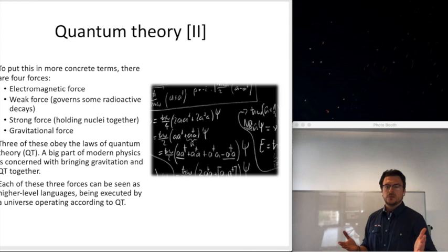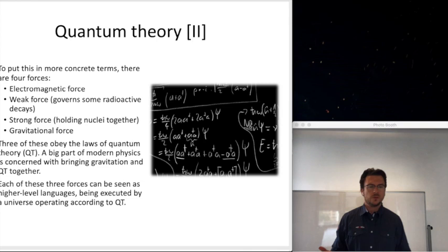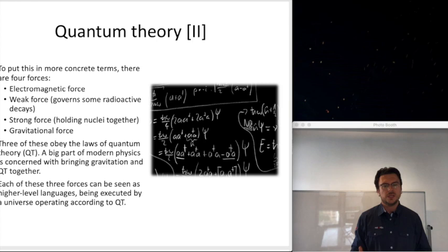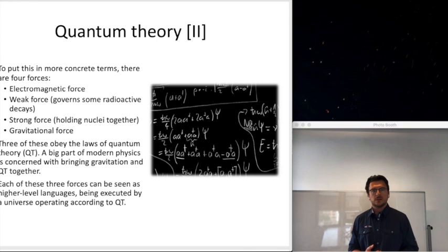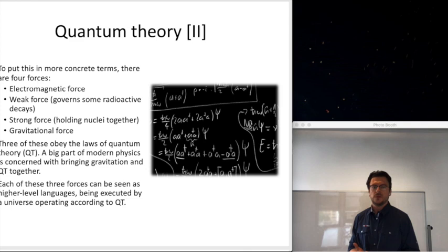To put it in more concrete terms regarding quantum theory: there are four forces in the universe — the electromagnetic force, the weak force (responsible for some forms of radioactive decay such as beta decay), the strong force (which holds atomic nuclei together), and gravitational force. For the first three, there is a sound quantum theory. For gravity, there have been discussions for a long time about what an appropriate quantum theory could look like, but there is none right now.